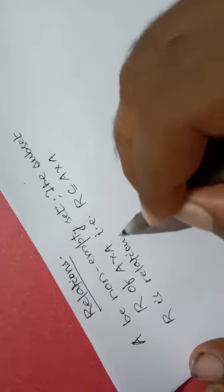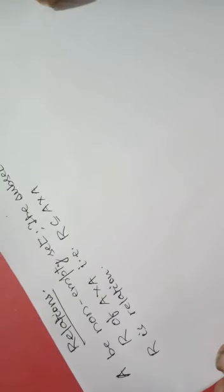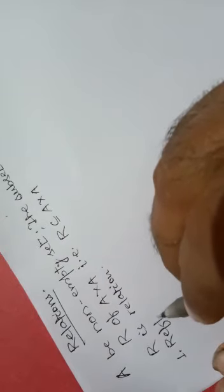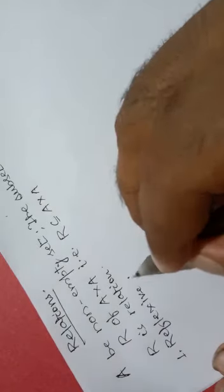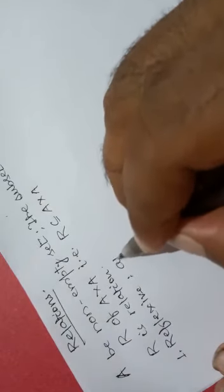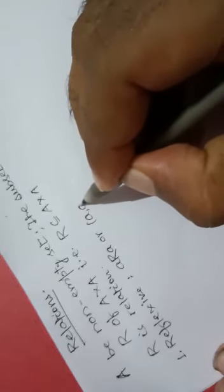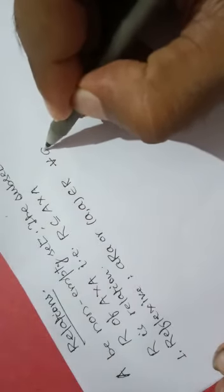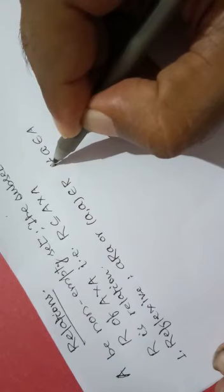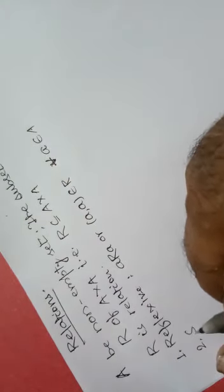Then we have discussed about equivalence relation. So for equivalence relation, we must have three conditions. The first one is reflexive. Reflexive means A is related to A, or element (A,A) belongs to R, for all A belonging to A. The second one was symmetry.